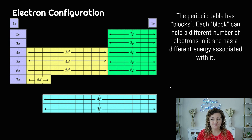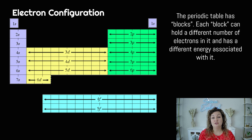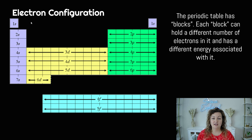Here's a periodic table. It is color-coded for you into the blocks of the periodic table. So we have the S block over here. Notice that helium is over here on the periodic table but it is purple because it is in the S block as well.